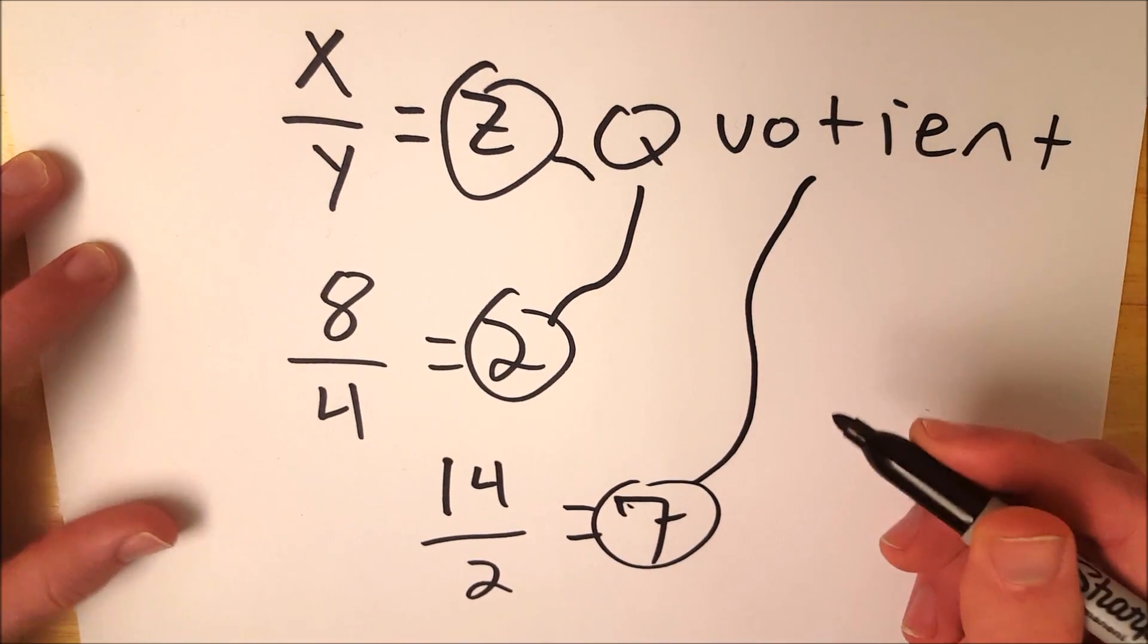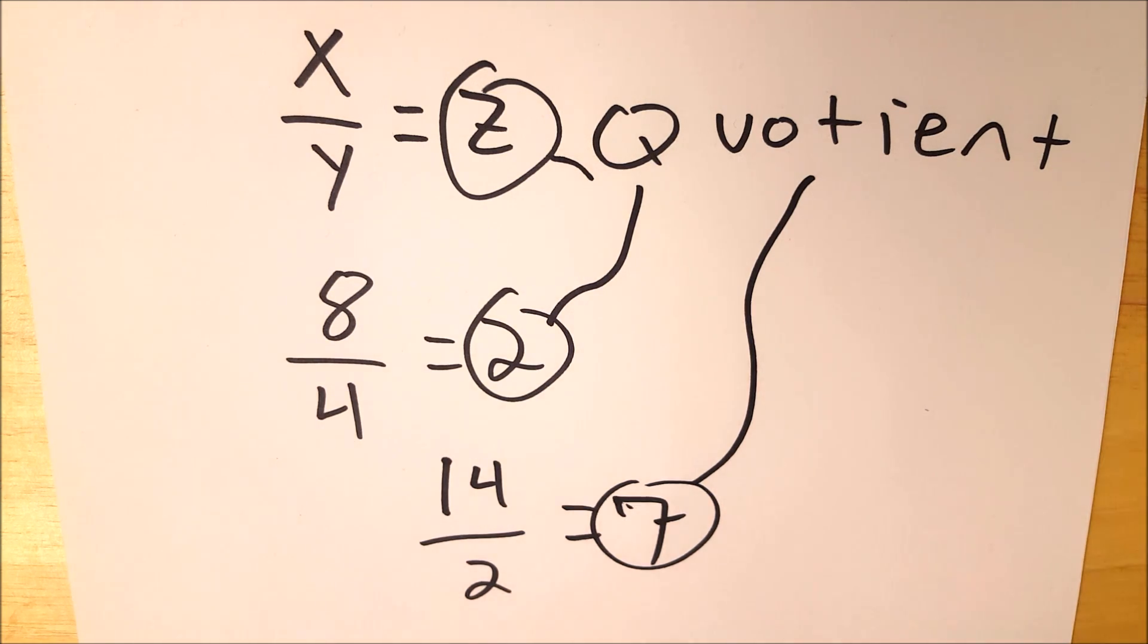A quotient is the quantity you get when you divide one quantity by another. And that's all you need to know. I hope this video helped. Let me know if you have any questions or video requests in the comments.